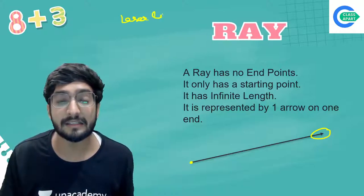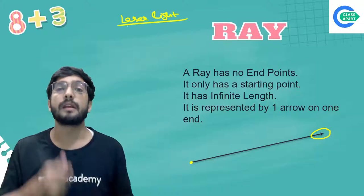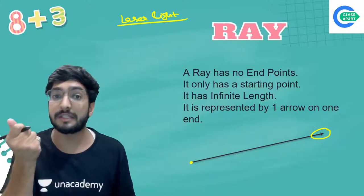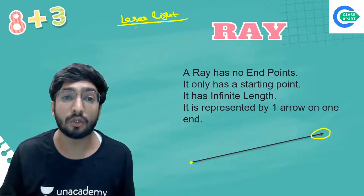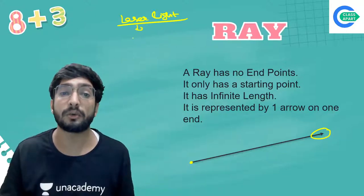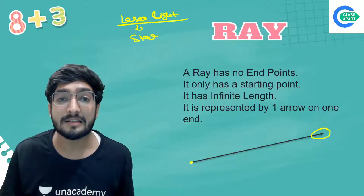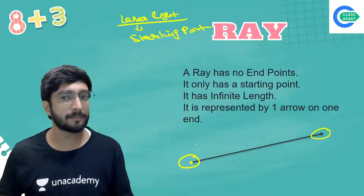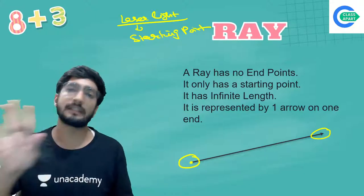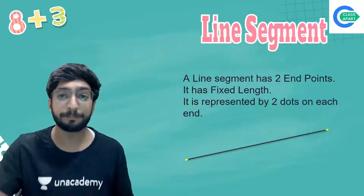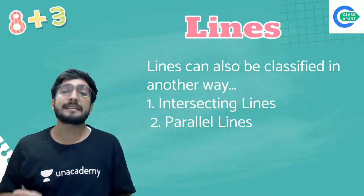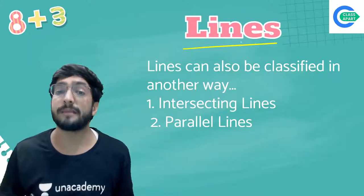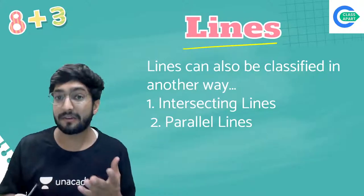Another example of a ray is laser light. You point it at a wall and it stops there. Point it at a faraway object and it reaches there. The laser's source is its starting point, and wherever it reaches is where it stops — but since there is no fixed endpoint, it is a ray. Remove any obstacle and it would travel to infinite length.